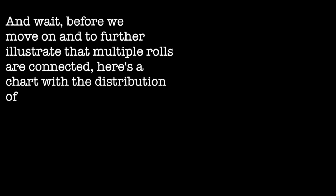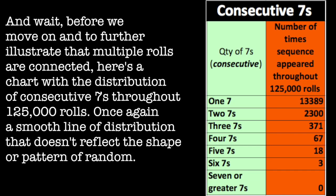And wait, before we move on and to further illustrate that multiple rolls are connected, here's the chart with the distribution of consecutive sevens throughout 125,000 rolls. Once again, a smooth line distribution that doesn't reflect the shape or pattern of random.